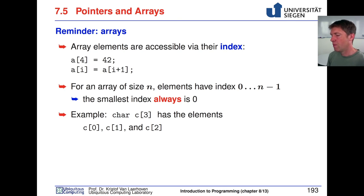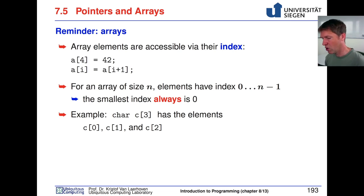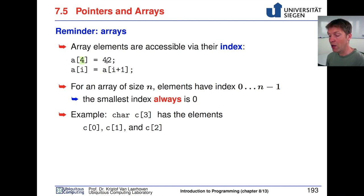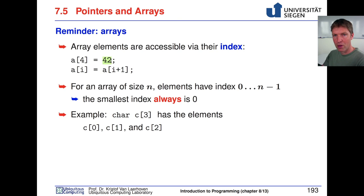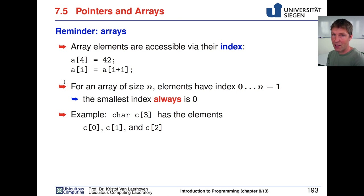Moving on to pointers and arrays. Arrays are pieces of memory where you have multiple objects or multiple instances of a particular variable or object. You have elements ordered into a sequence and you can index those. If you have an array A, you can use index 4 to access a certain value. For an array of size n, remember we start at index 0 and therefore end at index n minus 1.